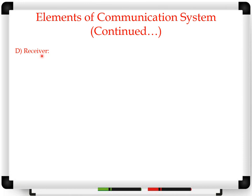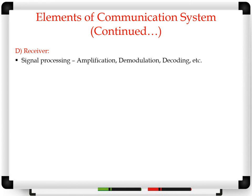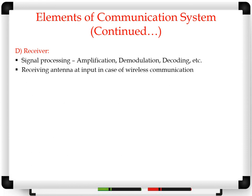Receiver. The function of the receiver is exactly opposite to the transmitter. When a signal is transmitted over a communication channel, it may be attacked by different noise sources and may be degraded. The main function of the receiver is to reconstruct the signal, increase its amplitude level, and bring it back to its original format. There will be different blocks related to amplification, demodulation, and decoding in the receiver. If it is wireless communication, the receiver will receive the signal with the help of a receiving antenna, which converts electromagnetic waves into an electrical signal.